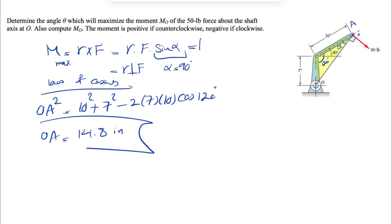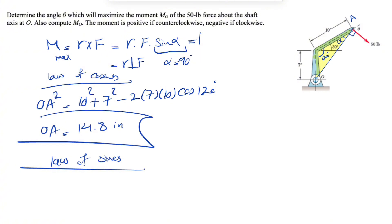Now we're going to do the law of sines. For law of sines, we're going to have OA over sine of the angle in front of it, which is 120, equals this side, 7 inches, over sine of alpha. Here alpha would be sine inverse of 7 sine of 120 divided by OA.